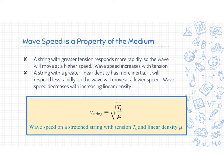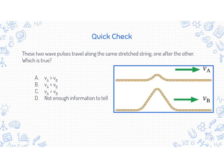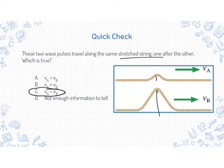Wave speed is a property of the medium. Strings are a great example — the tension and linear mass density determine how fast the wave travels. We have two different pulses traveling through the same string, and B has a greater amplitude than A. But which is true about their speeds? Their speeds are the same, because wave speed is a property of the medium — even though there's more energy in B.